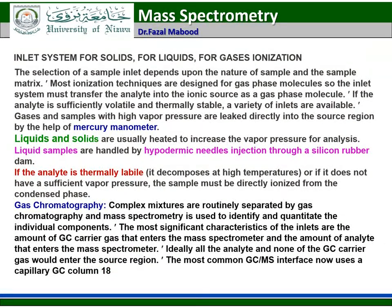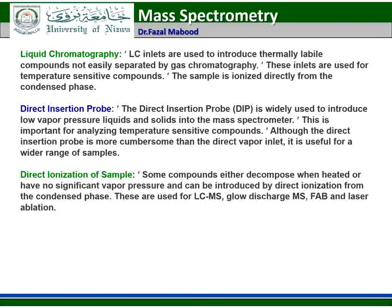Liquid chromatography inlets are used to introduce thermally labile compounds that cannot easily be separated by gas chromatography; these inlets are used for temperature-sensitive compounds where the sample is ionized directly from the condensed phase. The direct insertion probe is widely used to introduce low vapor pressure liquids and solids into the mass spectrometer, important for analyzing temperature-sensitive compounds. Some compounds either decompose when heated or have no significant vapor pressure and can be introduced by direct ionization from the condensed phase, used in LC-MS, glow discharge MS, FAB, and laser ablation.